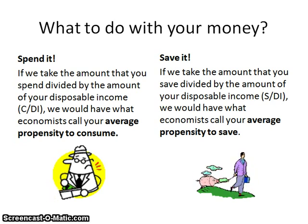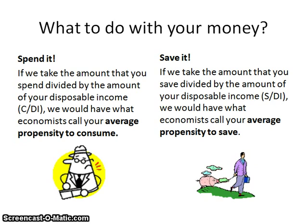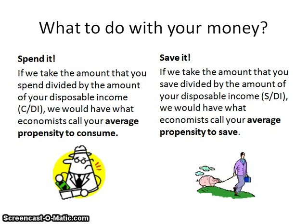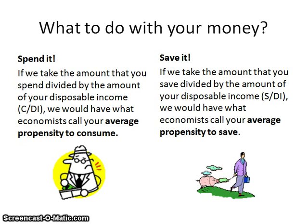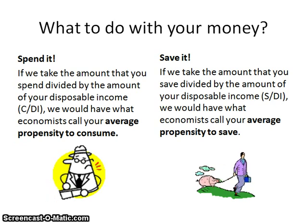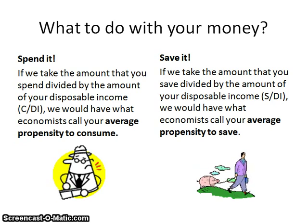If you're John Maynard Keynes, a British economist who developed a lot of the theories we're discussing in macroeconomics, you would say there are only two things you could do with your money: spend it or save it. If we take the amount of money that you spend and divide it by your disposable income, we get your average propensity to consume, or APC. If you save some of it, we take savings divided by disposable income, giving us the average propensity to save, or APS. So APC = C / DI, and APS = S / DI. Simple.